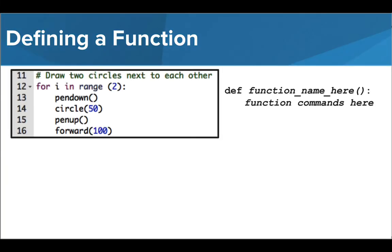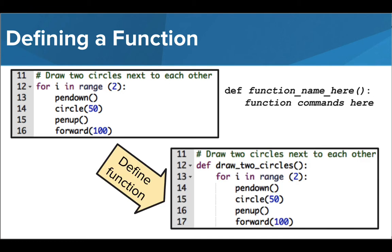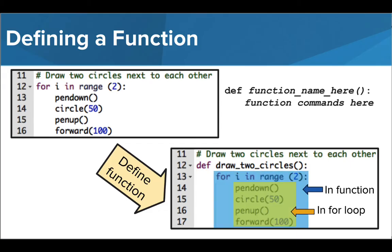Let's look back at the part of our four circles program we want to turn into a function. To define this function, we need to name it, and we've decided here to call it draw_two_circles, which follows all of our naming rules. Now let's take a close look at the indentation. Our function is being defined on line 12 and the commands inside are indented because they are part of the function. Lines 14 through 17 are indented twice — one indent is to show that these commands are inside the loop and the second indent is to show that they are also inside the function. We'll look at more examples of this in our code editor in a second.